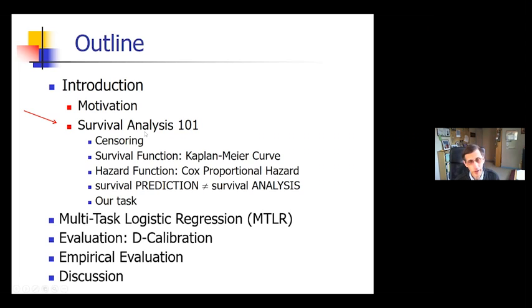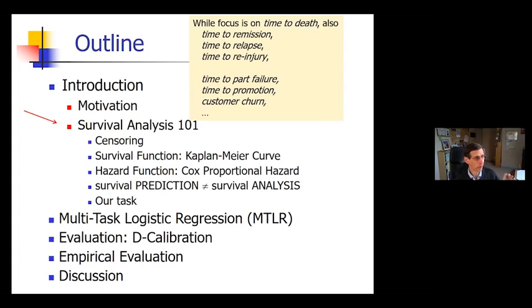Here's the outline of my talk. I motivated the context. I'm now going to say a little bit about survival analysis 101. What is survival analysis? Why is it different than standard regression? Certain standard models like Kaplan-Meier and Cox, as well as some other nuances. While the focus and all the terminology will be time to death, this really is time to an event happens. That event could be good. It could be time to remission of a disease or time to relapse, or time to re-injury. And it doesn't have to be medical.